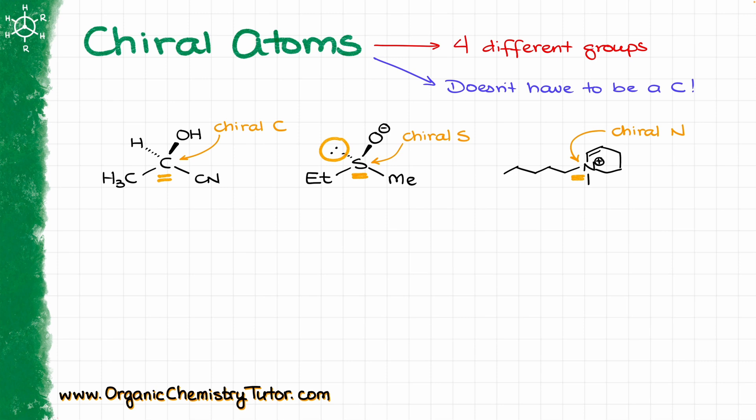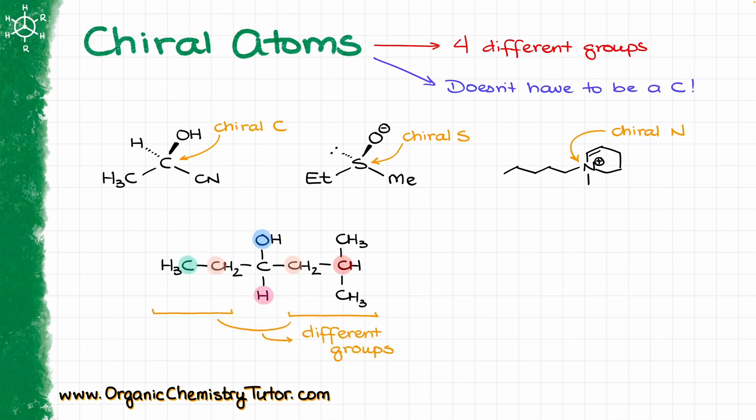So we have four different groups around the sulfur, so it is absolutely chiral. I also want to remind you that we do not limit ourselves just to the first atom when we are analyzing our groups attached to our atom of interest. You need to take into consideration the entire group. Groups might be different later in the chain, and if you don't pay attention to those differences, you can easily misinterpret your molecules and miss the chiral atom.